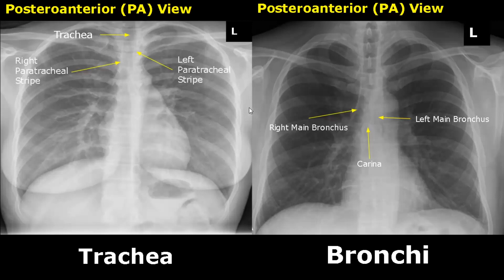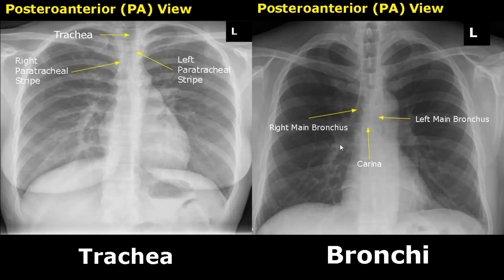The trachea bifurcates into the right main bronchus and the left main bronchus. There is a cartilage at this bifurcation junction and it is called the carina. The right main bronchus is shorter, wider, and has a vertical course, and the left main bronchus is longer and has a horizontal course.